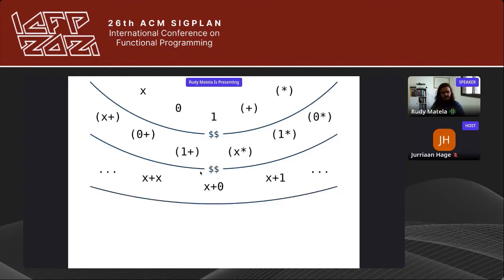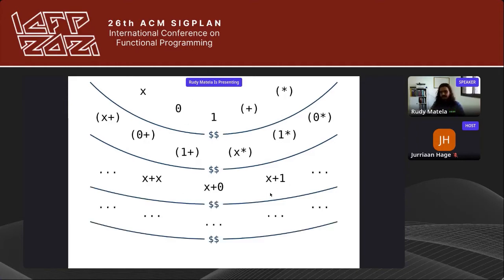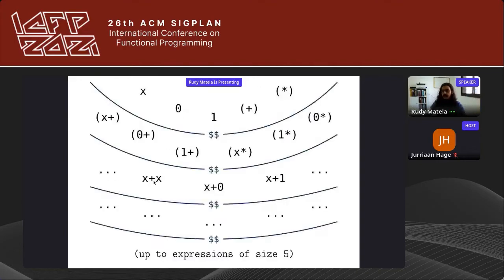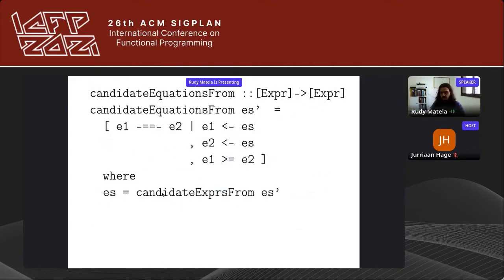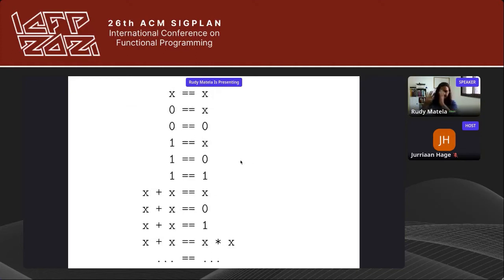It then uses the $$ operator again to combine values from previous sizes to make values of size 3, and so on up to an arbitrary limit of size 5 (5 symbols). We take those generated values and take the cross product of them, encoding each candidate equation as an Expr. The result is a list of candidate equations — some of which are not true, but we will filter those out later.